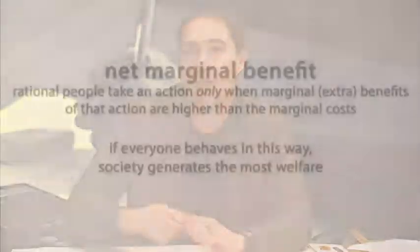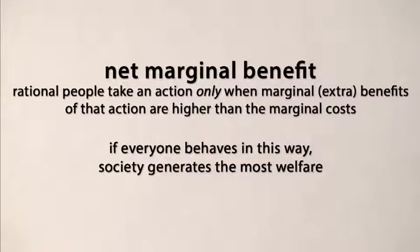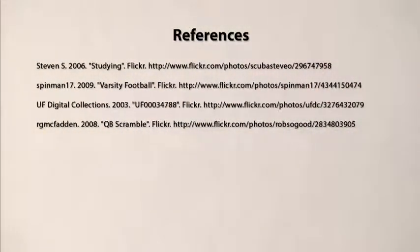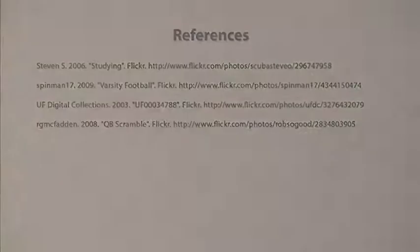This is something we all apply but don't always think about. A quarterback knows this intuitively — like a pool player using physics without knowing it. The principle is: you only take an action when the net marginal benefits outweigh the marginal cost. It's simple in theory but more complex in practice. You'll have questions to practice this concept this week.